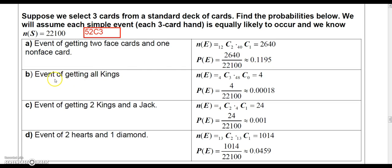The next event is the event of getting all kings. Well, in that case, out of the four kings, you'd want to choose three. And then out of the 48 cards that are not kings, you're going to choose none from there. Now, you really don't need this 48 choose zero because it just equals one. But I like to put it there so you can see that we're not choosing any other cards.